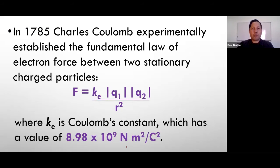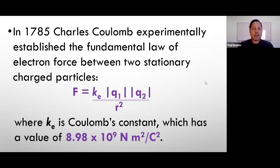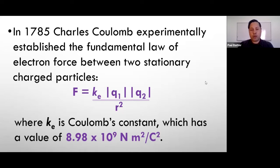In 1785, Charles Coulomb experimentally established a fundamental law of electric force between two stationary charged particles. His formula is: force equals ke (Coulomb's constant) times q1 times q2 — the charge of the first particle times the charge of the second particle — divided by r squared, the distance between the particles squared. Force is in newtons, charges are in coulombs (using absolute value, so we use the positive value regardless of sign), and r is in meters. Coulomb's constant ke has a value of 8.98 times 10 to the 9 newton·meters squared over coulombs squared.